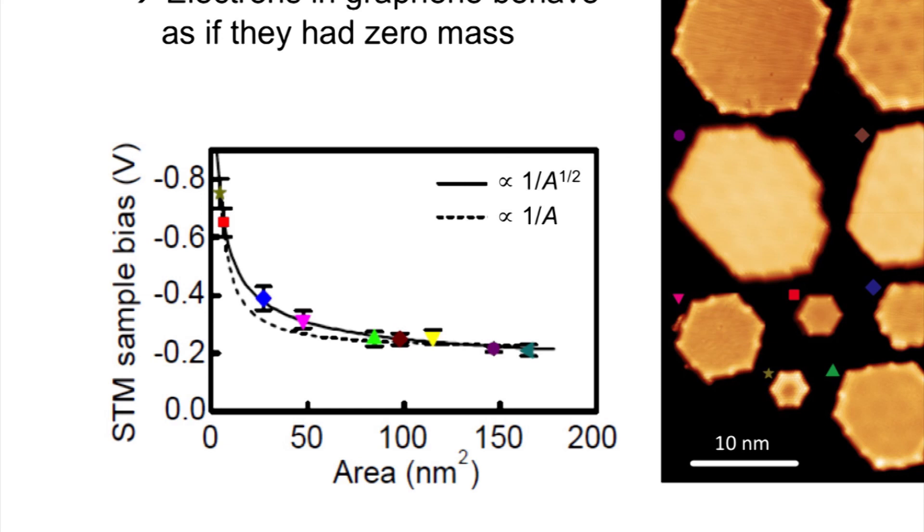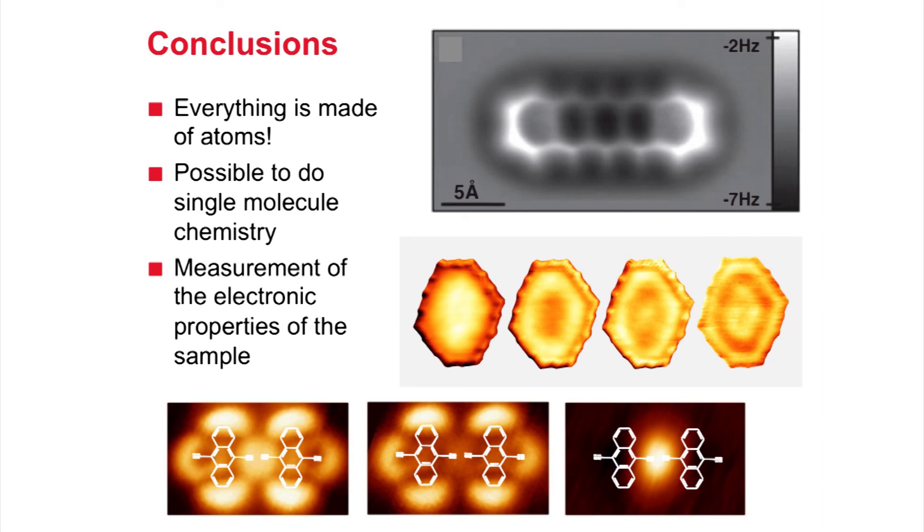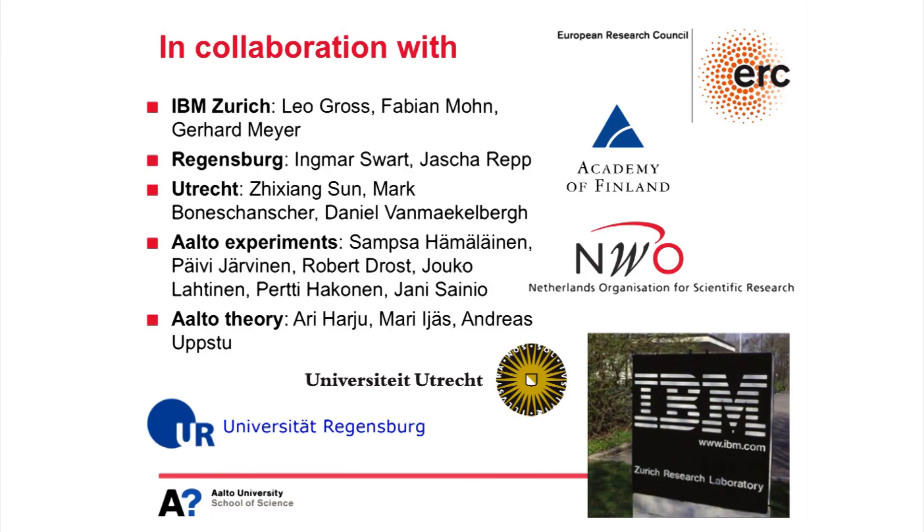I think with that I would like to conclude. Rest assured everything is indeed made out of atoms and we can see them. We can look at things like single molecule chemistry, look at where locally the electron addition or removal would take place, we can also make molecules, and finally we can study small structures with atomic resolution and learn about the electronic properties. This kind of research is typically a collaborative effort. The results that I've shown you have been done together with several labs over Europe - IBM Zurich, Regensburg, Utrecht, and different groups from Aalto that all contribute. We have been funded by many institutions. Thank you for your attention.